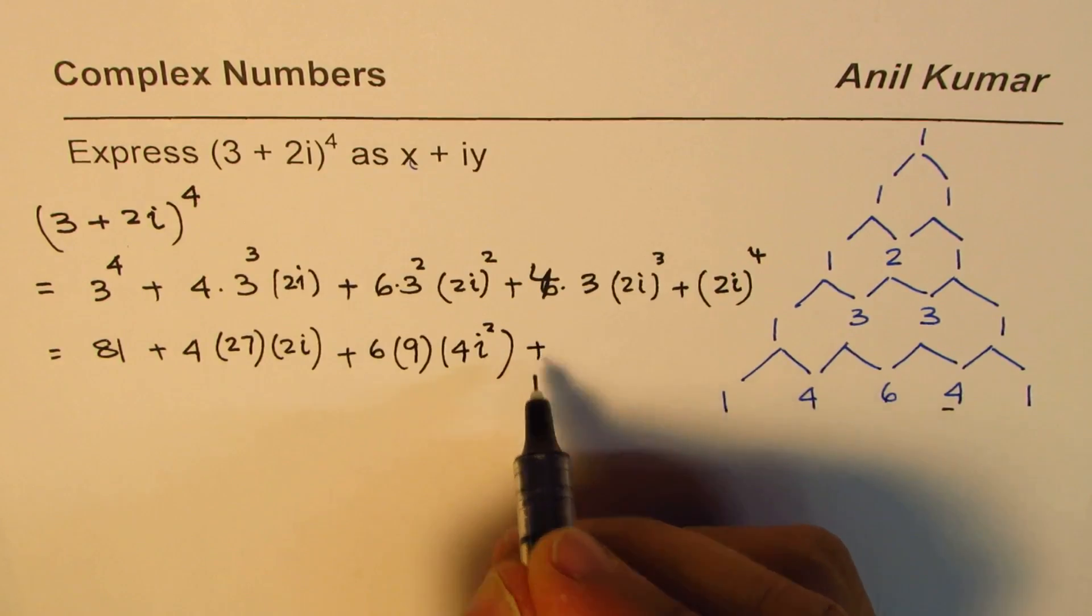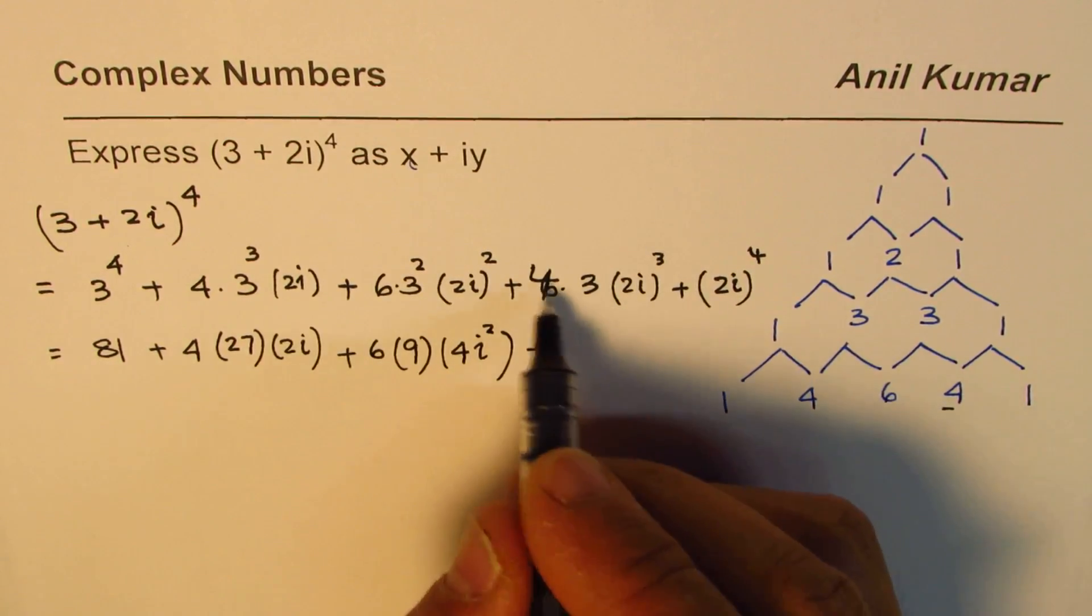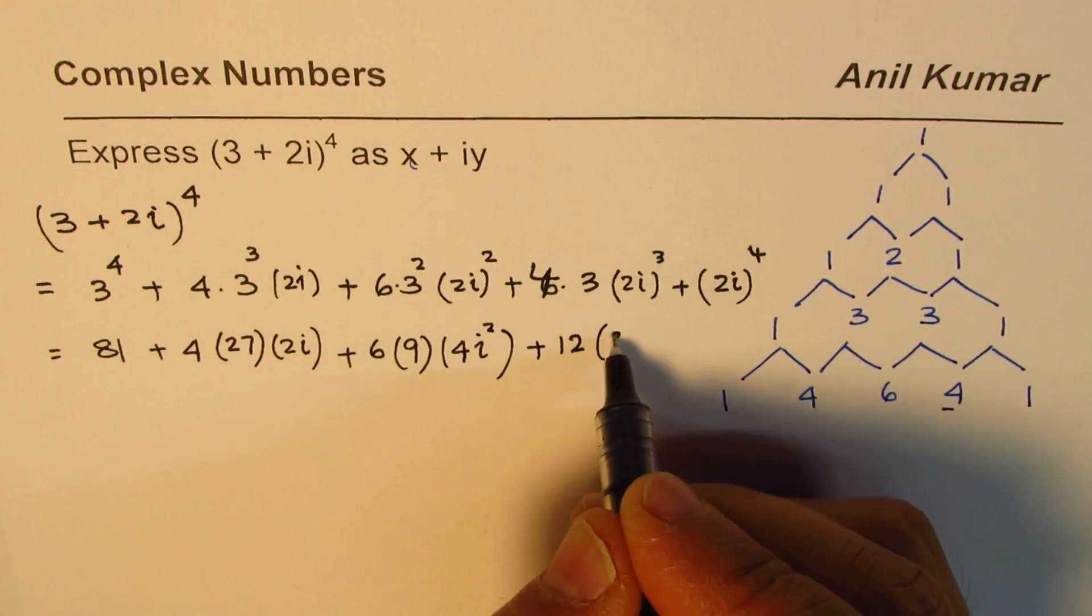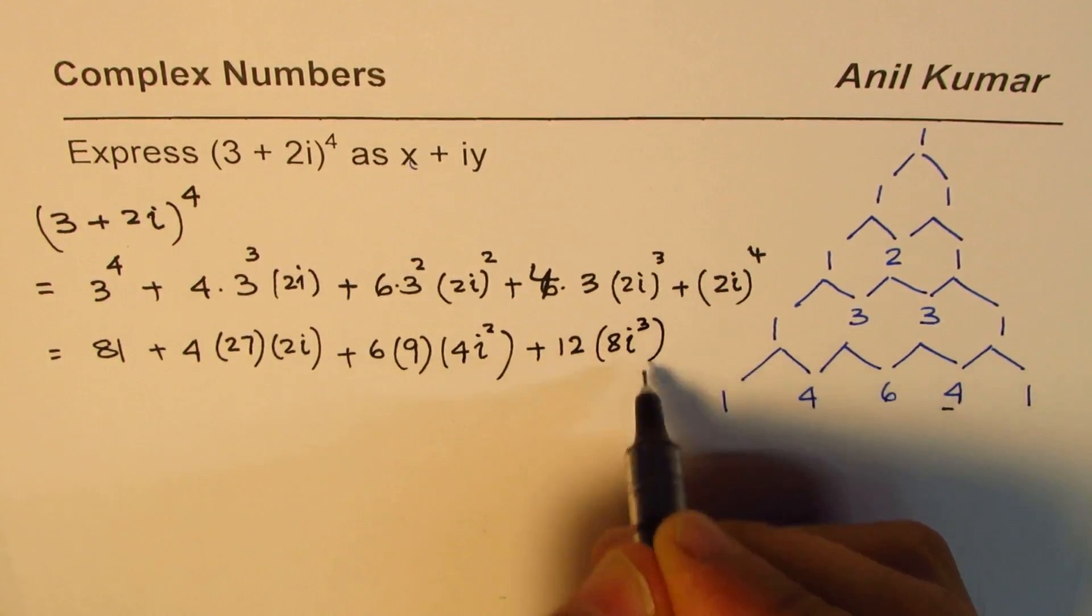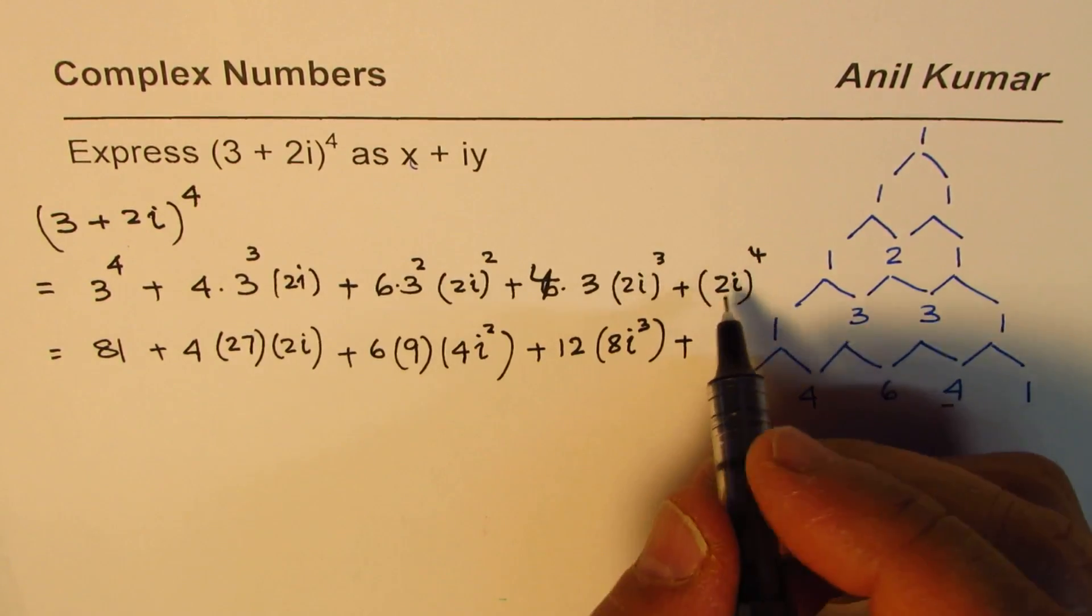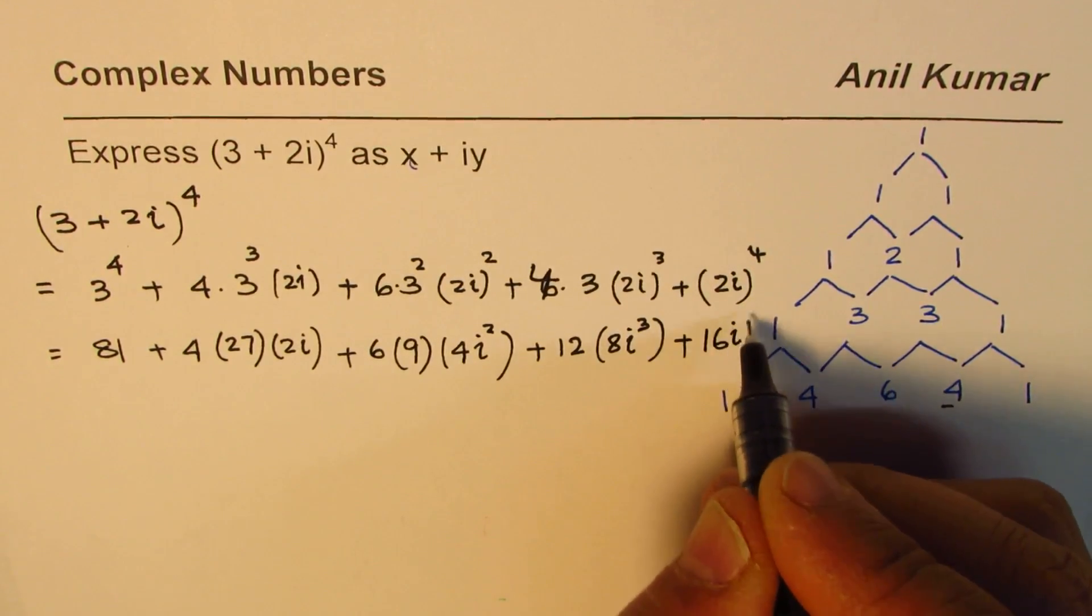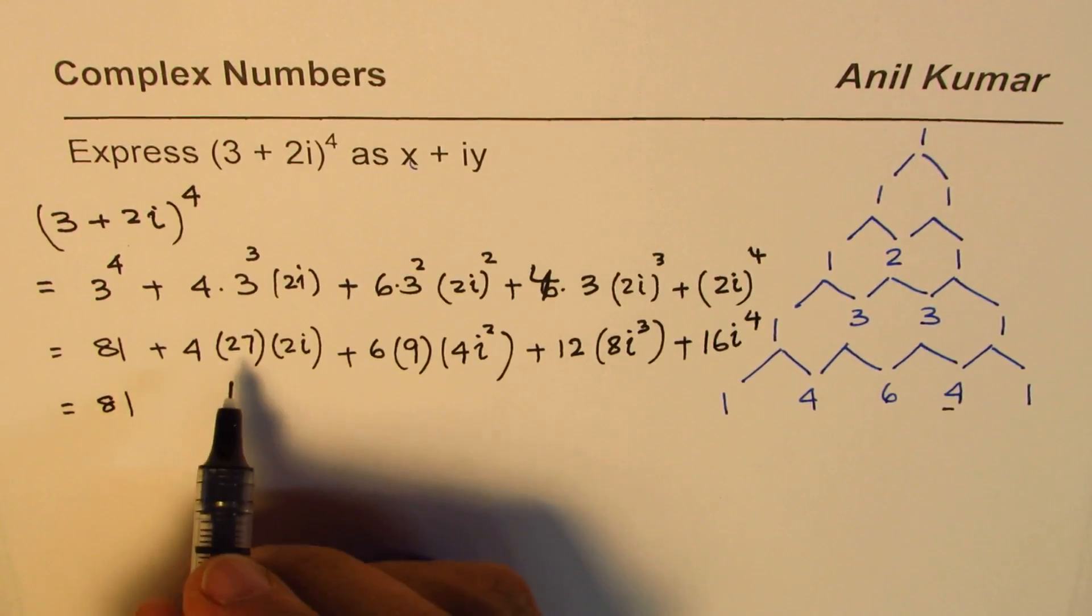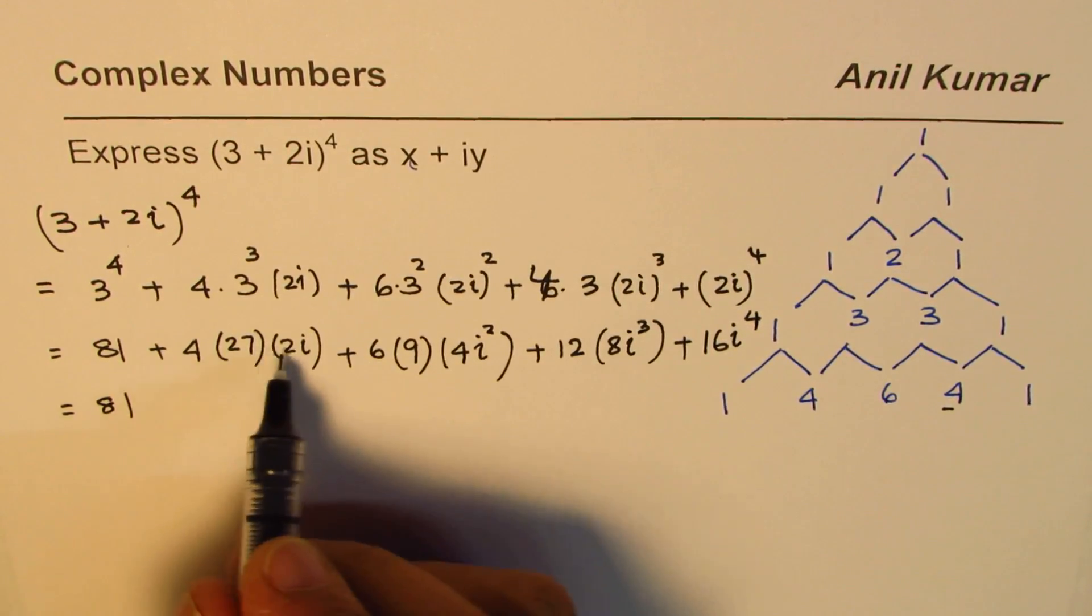Now the next term here is plus 4 times 3 is 12, 2 cube is 8 i cube, plus 2 to the power of 4, that means 16 i to the power of 4. So that gives us 81. Now we can multiply these numbers.